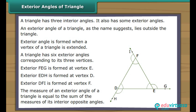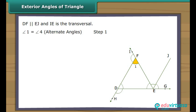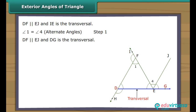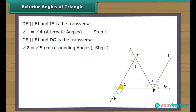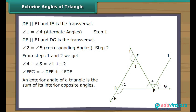Let us now prove the exterior angle property. We draw a line segment EJ from point E such that EJ is parallel to DF. If we regard IE as a transversal intersecting the parallel lines DF and EJ, angle 1 equals angle 4 (alternate angles). If we regard DG as a transversal intersecting the parallel lines DF and EJ, angle 2 equals angle 5 (corresponding angles). From these two steps, angle 1 plus angle 2 equals angle 4 plus angle 5, which means angle FEG equals angle FDE plus angle DFE. Therefore, an exterior angle of a triangle is the sum of its interior opposite angles.